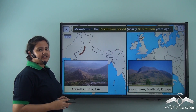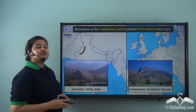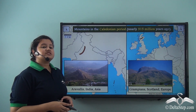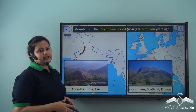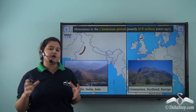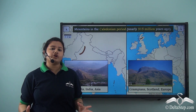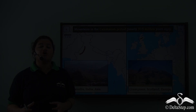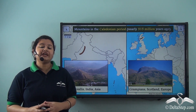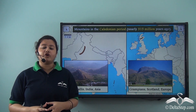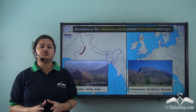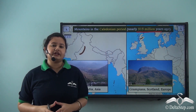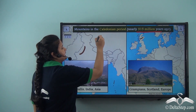In our previous lesson, we studied that the Aravallis were formed 350 million years ago while the Himalayas were formed 50 to 60 million years ago and are still building. So from this we can infer that all the mountains present on the earth's surface were not formed at the same time. On the basis of this, we can classify the period of mountain building into three time periods. Some mountains were formed quite a long time ago in the ancient period, that is nearly 350 million years ago. This period of mountain formation is called the Caledonian period.